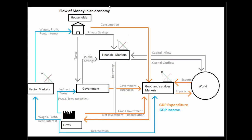We introduced this way back and we took a look at this to say we could follow the way that money flows through an economy. We used this to separate between our expenditure and our income approach — our expenditure and our income side of measuring GDP. For our Keynesian cross, what we're really going to be focusing on is all of these orange arrows here — we're focusing on our expenditure side.